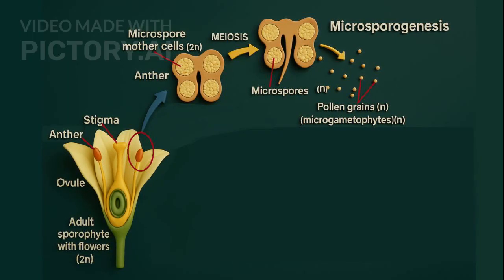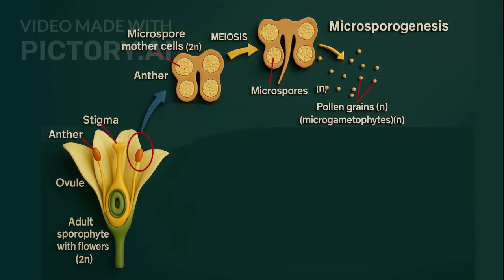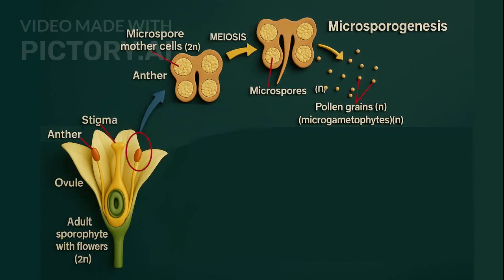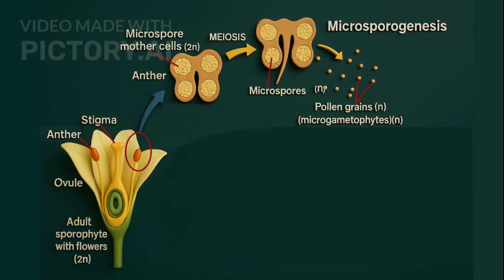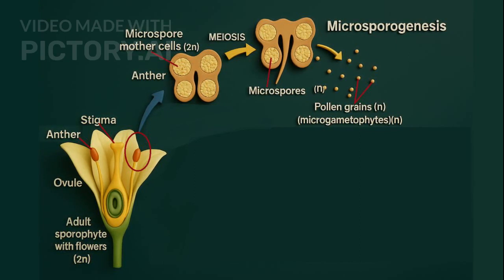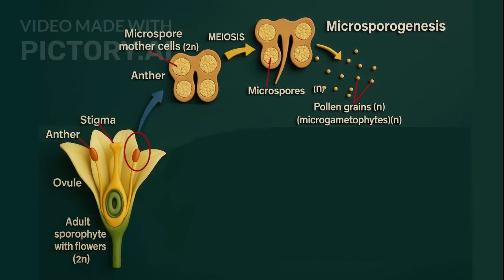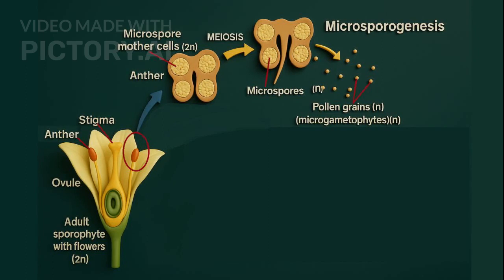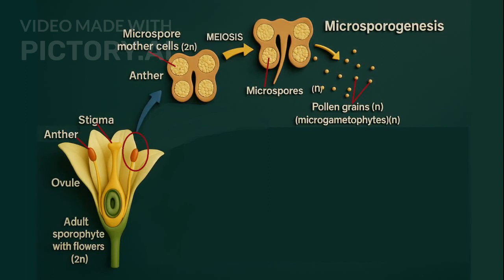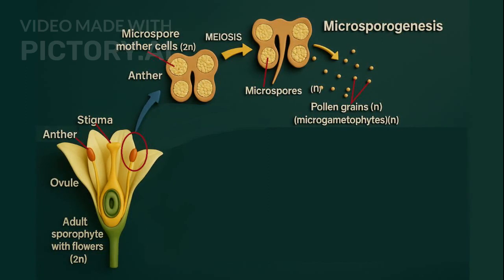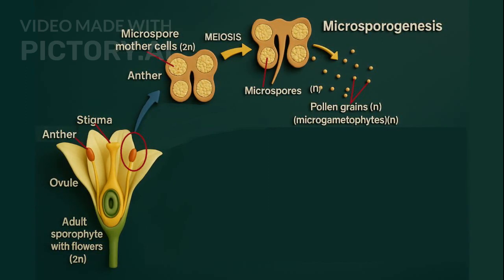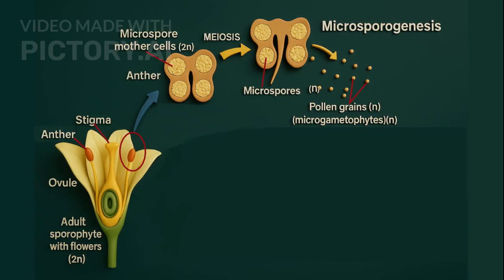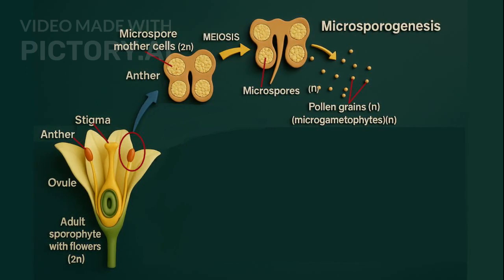Microsporogenesis and development of male gametophyte: Inside the anther, pollen mother cells (PMCs), or microsporocytes, undergo meiosis to form microspores arranged in tetrads. Each microspore develops into a pollen grain, the male gametophyte.